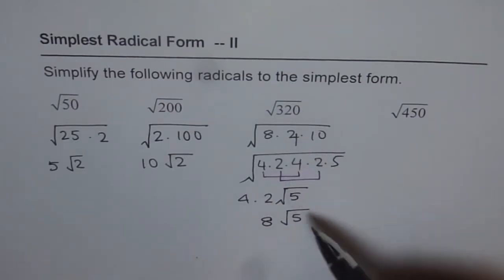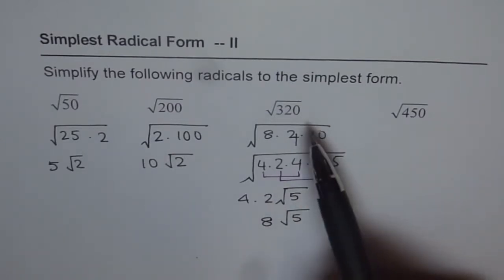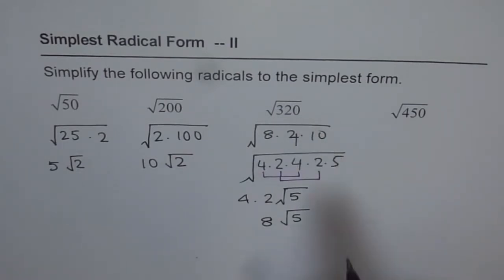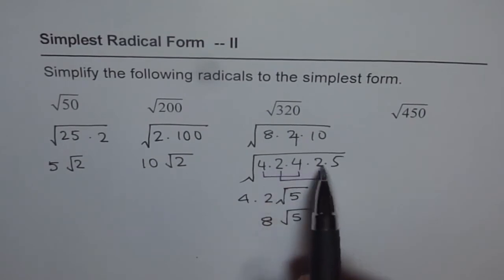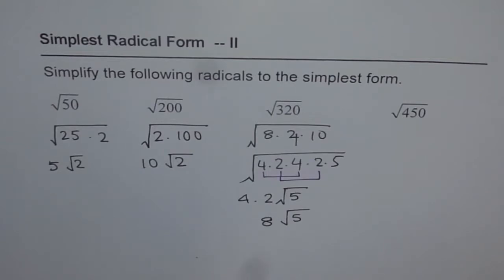We could always do it like this. So I'm showing you this method. When the numbers are pretty big, at that time, don't really wait to figure out which are perfect squares and which are not. You could go straight like this. Just break it down into smaller factors and then figure out what best combinations could give you perfect squares. So these are different ways of factoring.